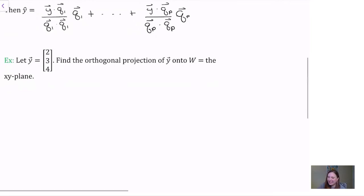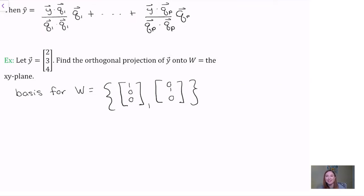First, we need a basis for w that is orthogonal. Let's begin with our typical basis for the xy plane, which would be e1 and e2. And notice that those vectors are orthogonal. If I took their dot product, it would be 0. So we have an orthogonal basis already, and we're good to go.